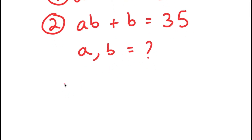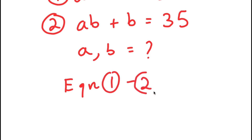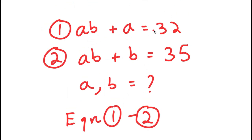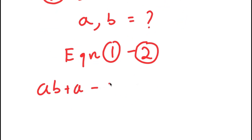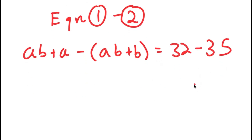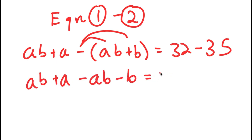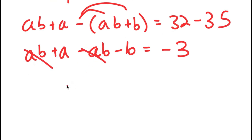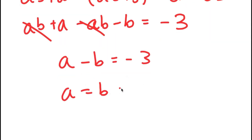To start, I'm going to subtract equation 2 from equation 1. So I have AB plus A minus AB plus B is equal to 32 minus 35. Distributing the negative sign gives AB plus A minus AB minus B is equal to negative 3. The AB terms cancel, leaving A minus B is equal to negative 3, which means A is equal to B minus 3.